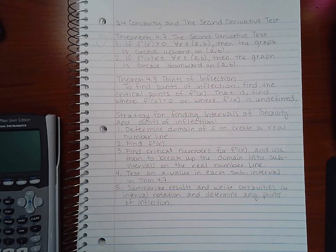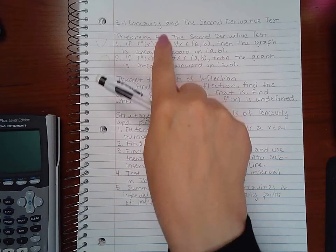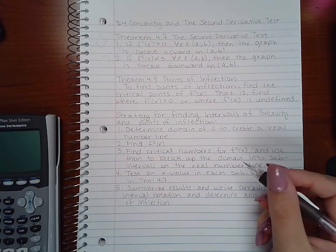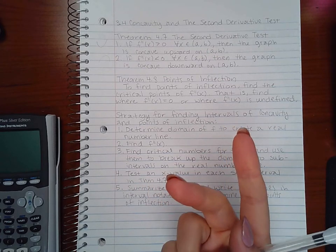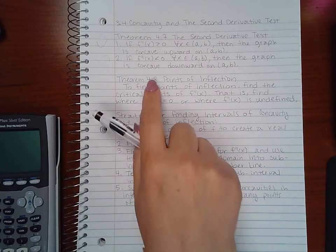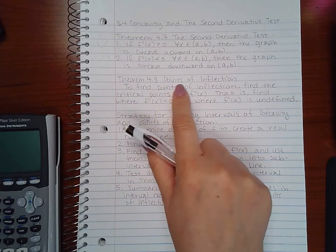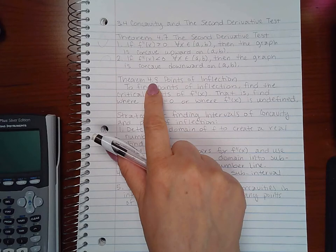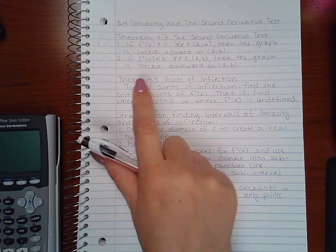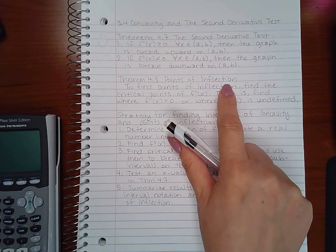Theorem 4.8, the theorem numbers are off but that's because the book selection change threw the numbers off. But really the number isn't important, it's the title of the theorem that you need to pay attention to. So it may have a different number in the textbook, but it's still the points of inflection theorem.